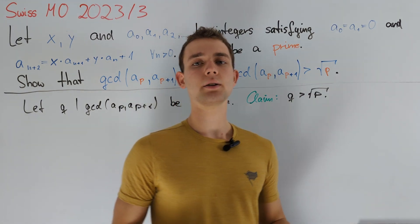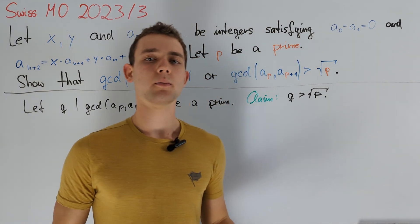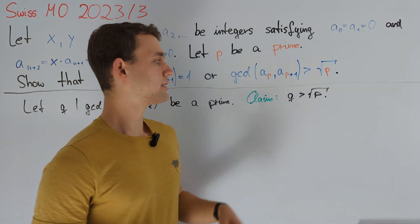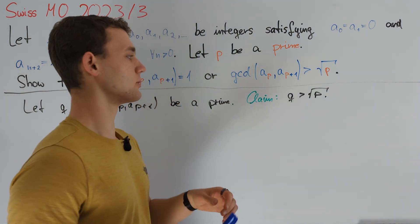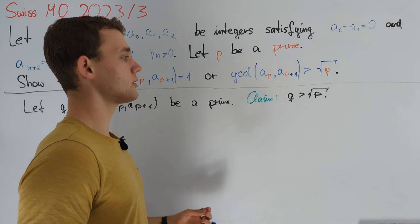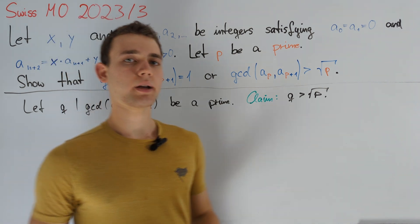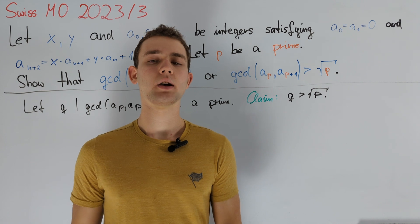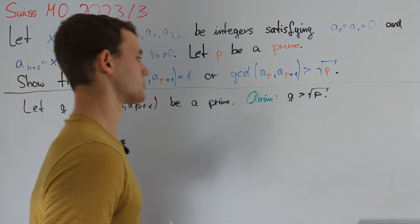To prove this claim we consider the sequence (aₙ, aₙ₊₁) modulo q. We will show that this sequence of pairs has period equal to p and we note that there are only q² pairs of residue classes modulo q. We will use this to finish our proof.